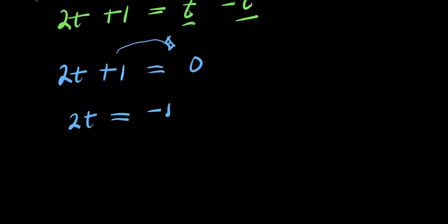And to solve for t, what we are going to do will be we divide this by 2, we divide this by 2. So we have t equals negative 1 over 2.